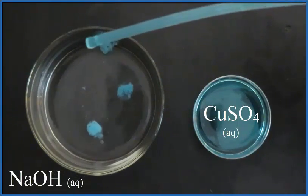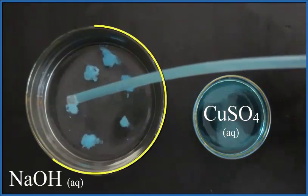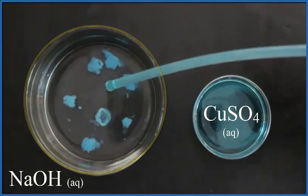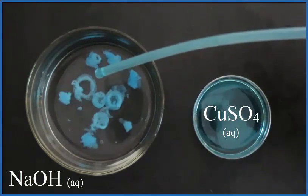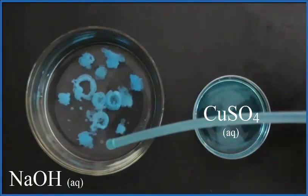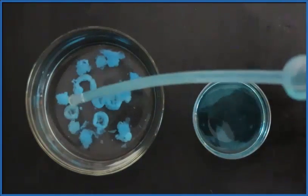So I'm dropping aqueous copper 2 sulfate, CuSO4, into aqueous sodium hydroxide, NaOH, and you see that there's a solid forming, that blue solid, and it's awesome when it makes those little rings there. That's our precipitate, two aqueous solutions, and we form a solid.